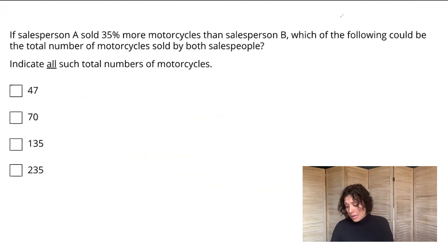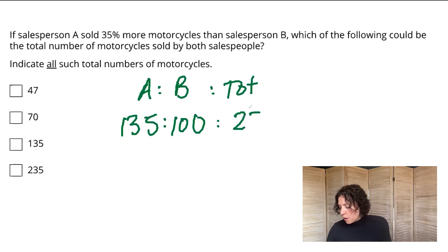So what I mean by that is that if we were to think in almost like real number terms, the ratio of A to B would be as if B sold 100 motorcycles, A selling 35% more would be 135. That would then put us at a total number of motorcycles in this scenario of 235, which is nice. That's one of our answer choices as a possible total. The question is, are there other possible totals?